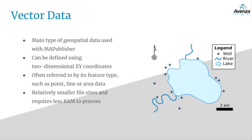Vector data is the first type of geospatial data and the main type used with Map Publisher. It can be defined using two-dimensional XY coordinates and is often referred to by its feature type, such as point, line, or area data. In the example map here, the wells represent point data, the rivers represent line data, and the lake represents area data. An advantage of vector data is that it will have a relatively smaller file size and require less RAM to process than a comparable study area of raster data.